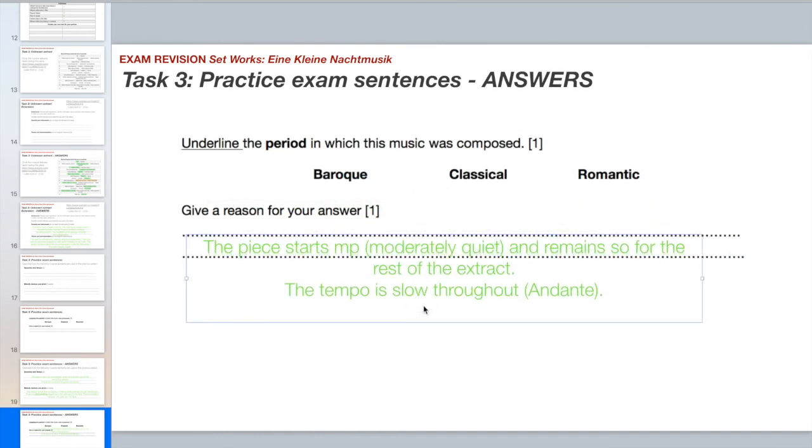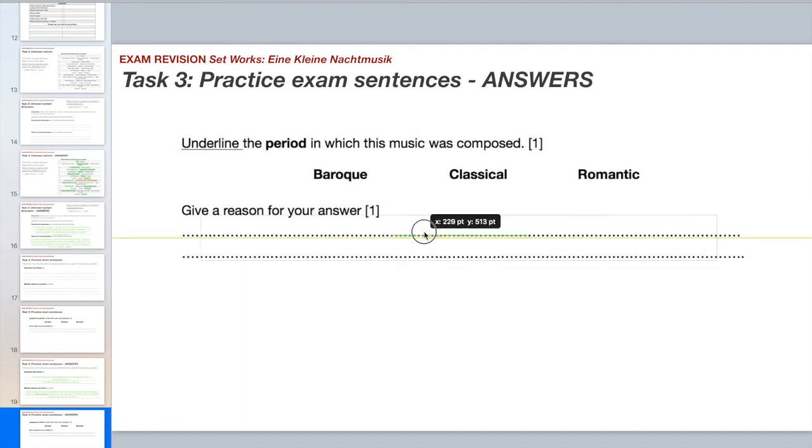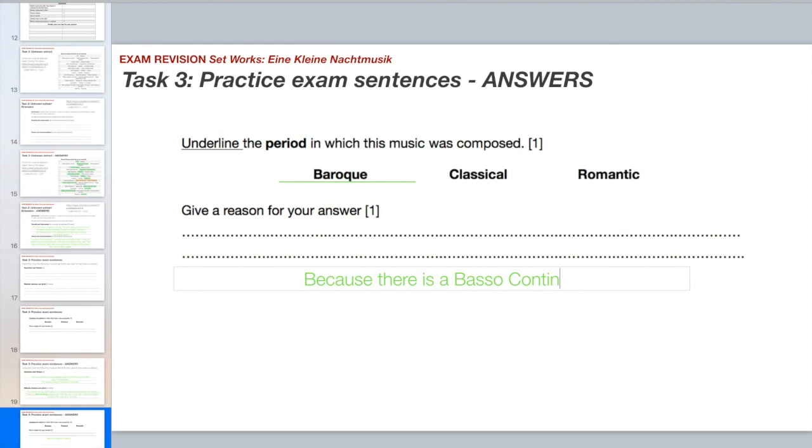Okay, answers here. Well, this is baroque music, and the big giveaways, that harpsichord, and the basso continuo, which is the harpsichord and the cello are complemented together. So I would say because there is a basso continuo, which is common in the baroque period, so harpsichord and cello.